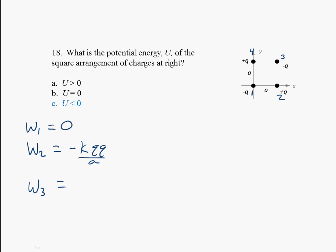The work to bring in charge three, well, we have to worry about charge one. These are both minus, that's going to be a positive work there, plus k q q, and then we have the square root of two times a. And then because of charge two here we're going to have negative, so we're going to get minus k q q, and that separation is just a.